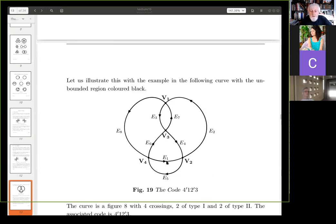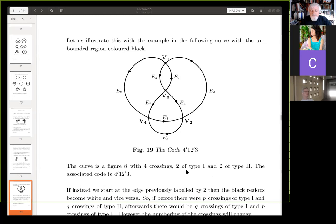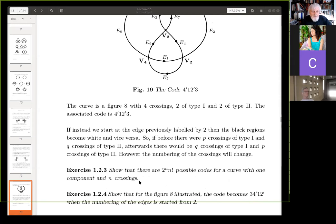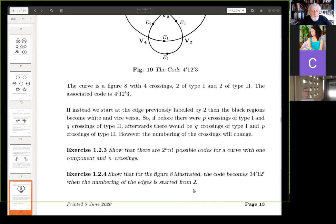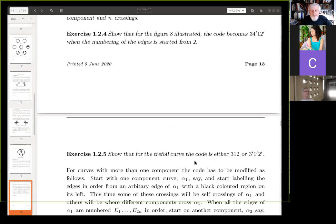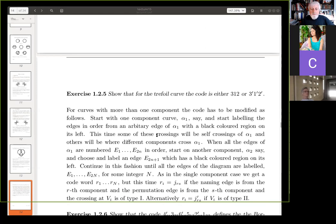The curve is a figure eight with four crossings, two of type one and two of type two. The associated curve is that. Yeah. Well, of course the code will change. If we start at an edge previously labeled two, then anyway, so there are lots of possible codes for a curve with one component and N crossings. Okay, that's a little exercise for the trefoil. The code is either three, one, two or three dashed one, two dashed, up to rotation. And then there's a little definition. What happens if you've got more than one component, then you have to use two indices because there may be crossings from another component. So this apparently this here defines the Borromean rings.